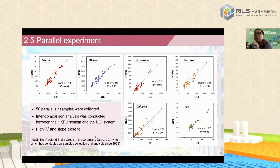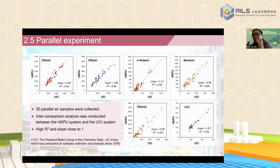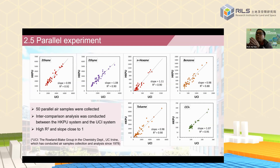Inter-laboratory comparison is also very important for ensuring data quality. We periodically perform intercomparisons with the Don Blake group in the Chemistry Department at UC Irvine. For some species, the slope was close to 1 and r² was above 0.9, indicating our system is reliable.